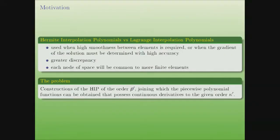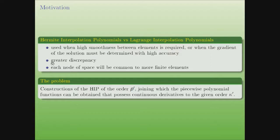The problem solved in this talk is the construction of the Hermite interpolation polynomial up to order p, joining which a piecewise polynomial function can be obtained that possesses continuous derivatives up to the given order. These polynomials are used to construct finite element schemes when high smoothness between the elements is required, or when the gradient of the solution must be determined with high accuracy. The schemes with Hermite interpolation polynomials have greater discrepancy on the same grid versus the Lagrange polynomial.